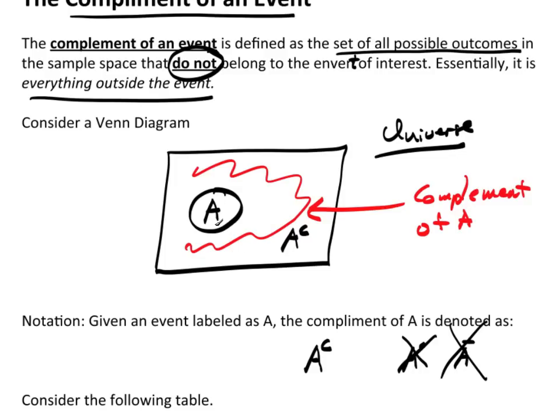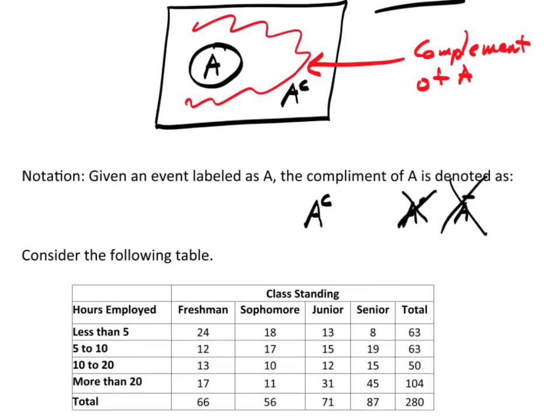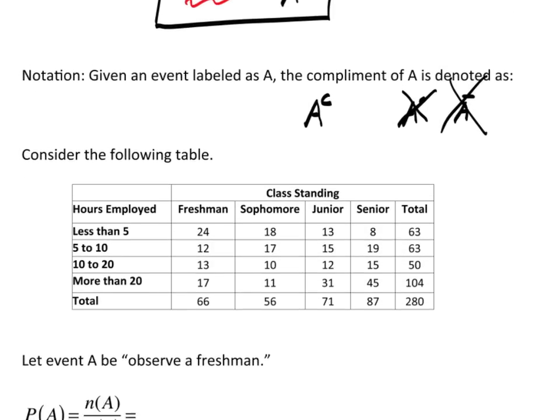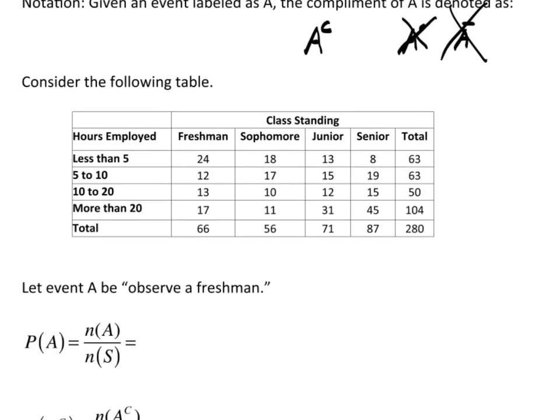So perhaps A is getting two heads. Well, out here would be everything else: no heads, one head, or three heads. Now, let's consider the following table here. We're going to leave the idea of tossing coins for a few minutes.